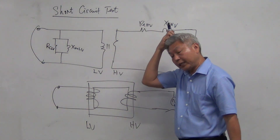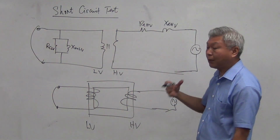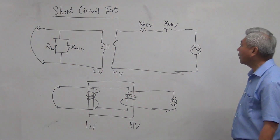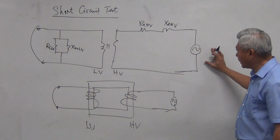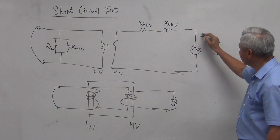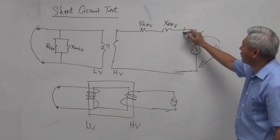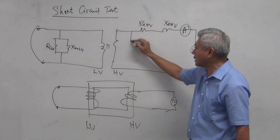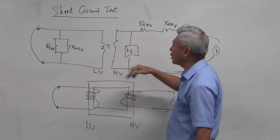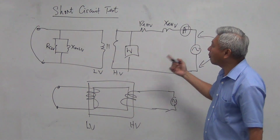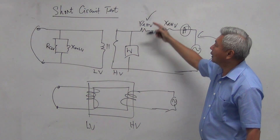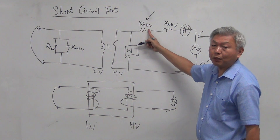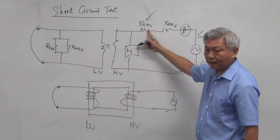Short circuit is quite dangerous, so therefore we perform the experiment at a very small voltage instead of a high voltage. We put a voltmeter here to measure the voltage, an ammeter here to measure the current, and a wattmeter here to measure the power. The power measured will be the power that occurs in REHV, because real power is what happens in the resistive part of this circuit.